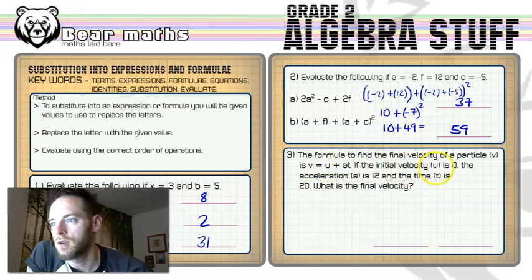If the initial velocity U, which is represented by the letter U, is 0, the acceleration A is 12 and the time T is 20, what is the final velocity? So we're looking for this value of V. So we just use this formula and we substitute the numbers in that we've been given.